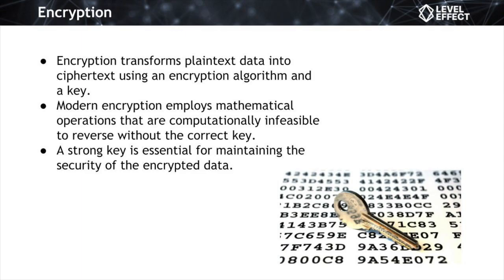In review, encryption involves the transformation of plain text into ciphertext using an encryption algorithm and a specific key. Its primary objective is to render sensitive information unreadable to unauthorized individuals during transmission or storage. Modern encryption relies on complex mathematical operations that make it practically impossible to reverse without the corresponding decryption key. A strong encryption key must be sufficiently long and complex, making brute force computationally infeasible, and proper key management—generating and storing keys securely—is essential to maintaining security.